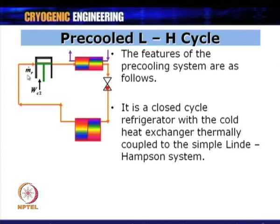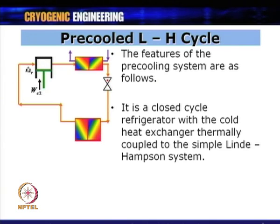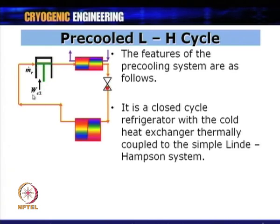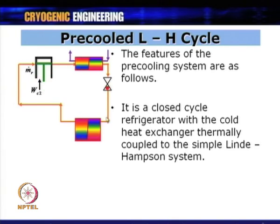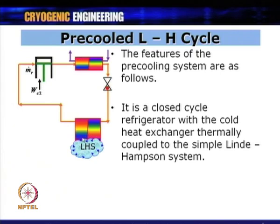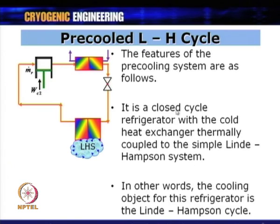The refrigerant mass flow rate is m_dot_r and the power required for the pre-cooling compressor is WC2, while power for the main cycle compressor is WC1. The cooling object for the pre-cooling refrigerator is essentially the Linde-Hampson cycle itself. The heat exchanger of the pre-cooling system is cooled by water or air, and a JT device is used to attain the lower temperature.